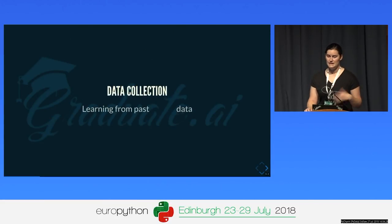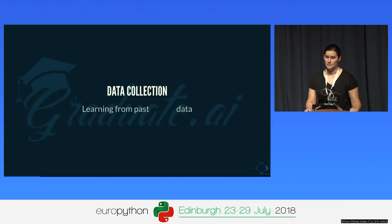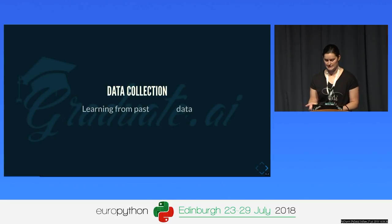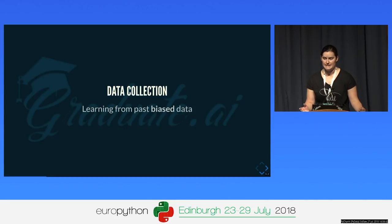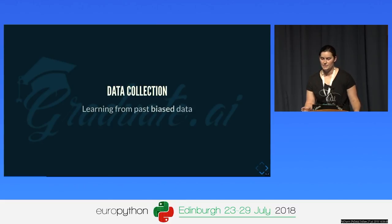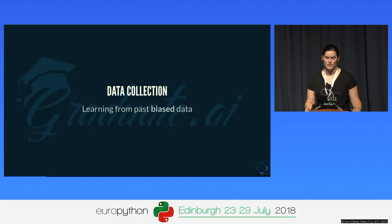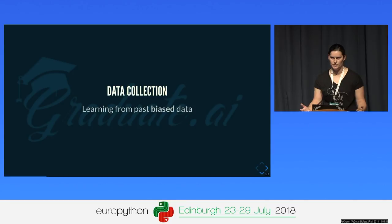Whenever we're collecting data, we are collecting data that comes from our real world, and our real world is full of bias and prejudice. We may encode some of these biases into our datasets. For example, as we said, there are fewer girls in technical studies than boys, so the algorithm may learn that gender is a strong predictor of interest in computer science — and that's not something we want.